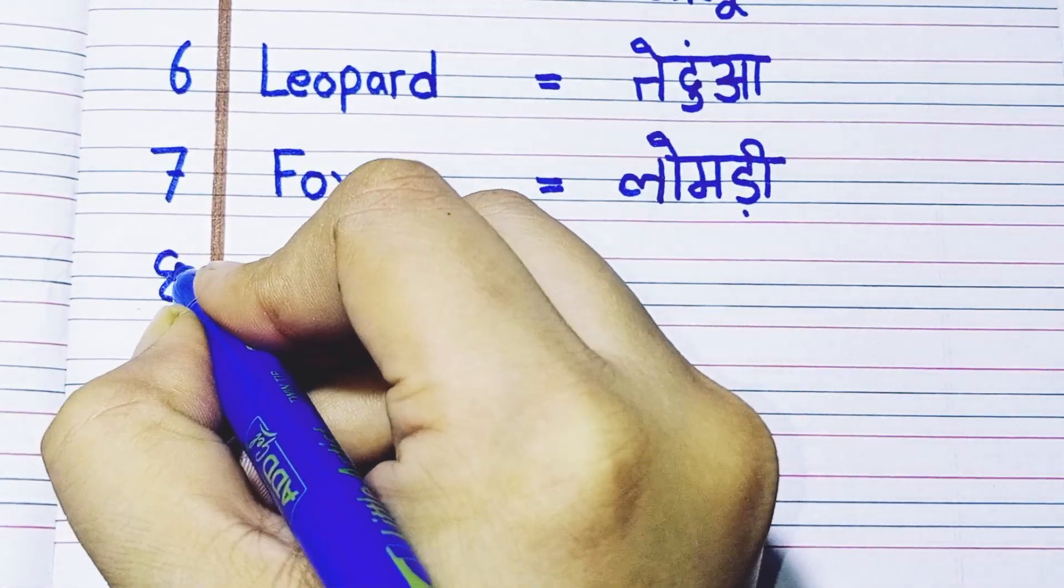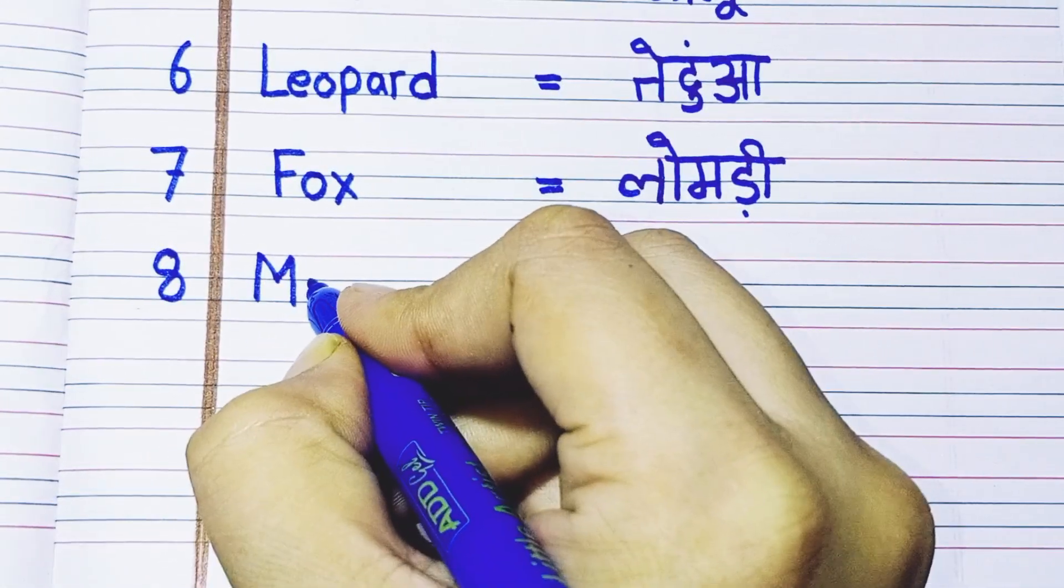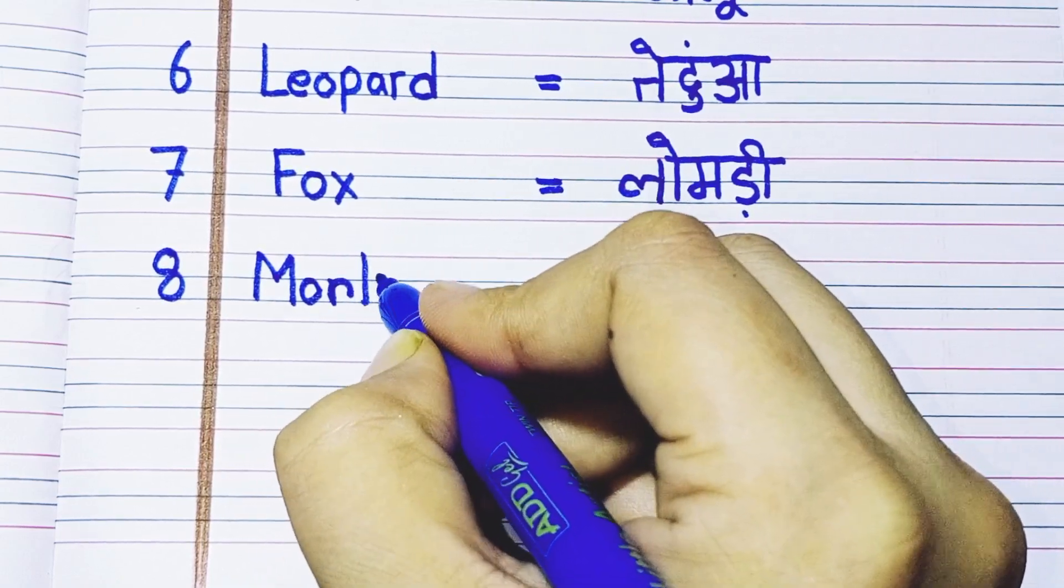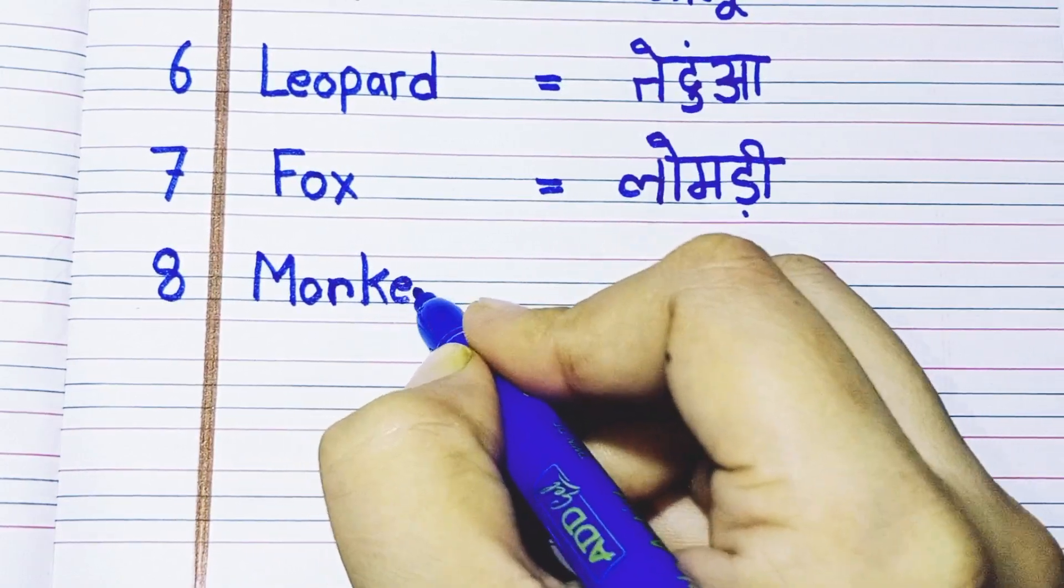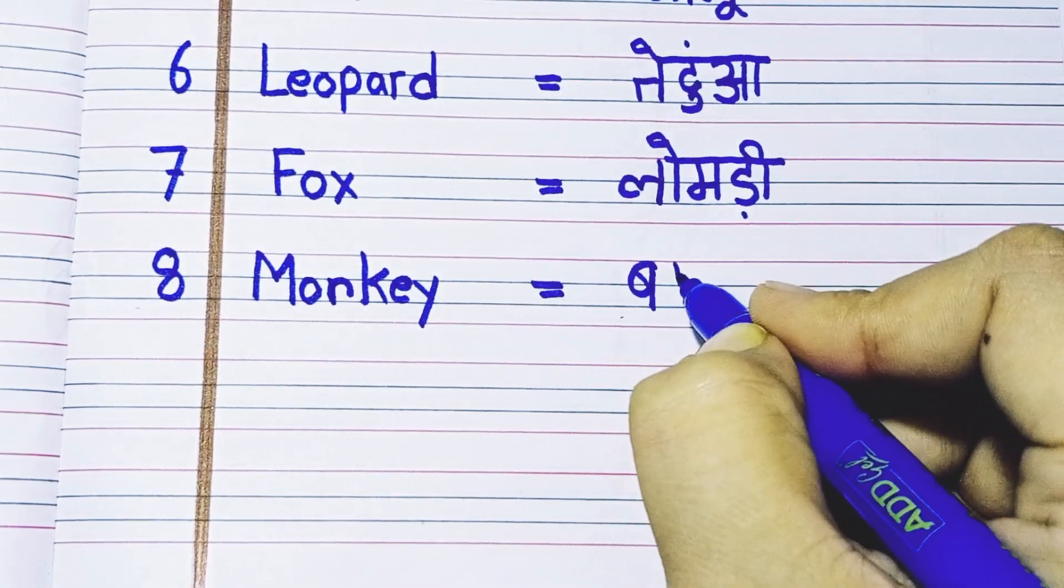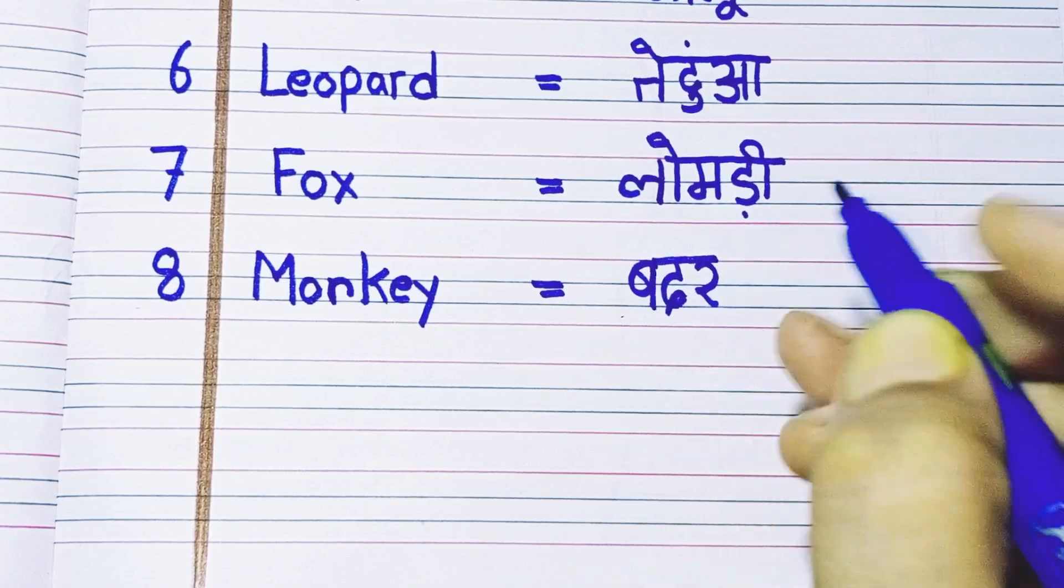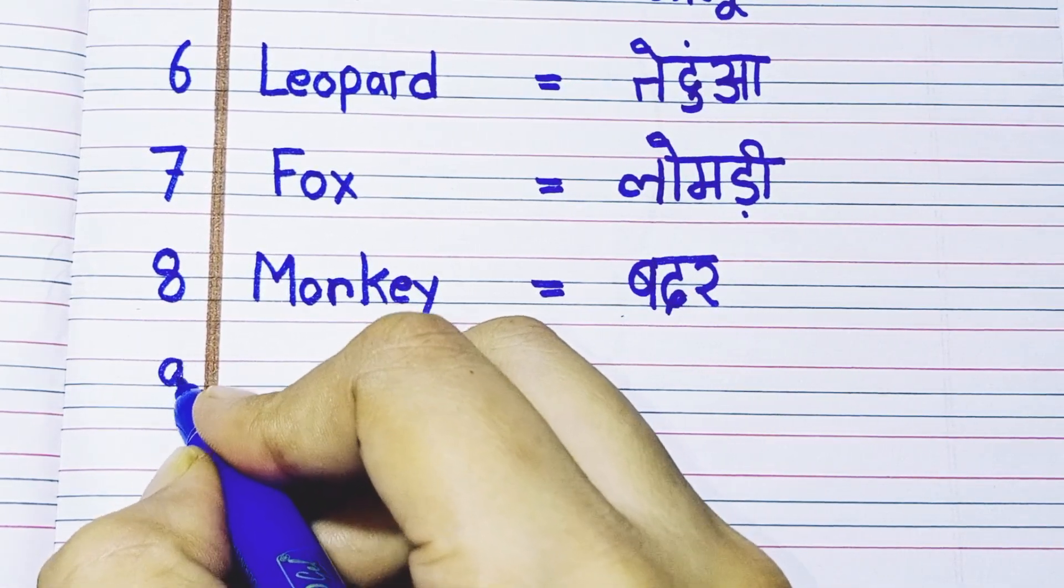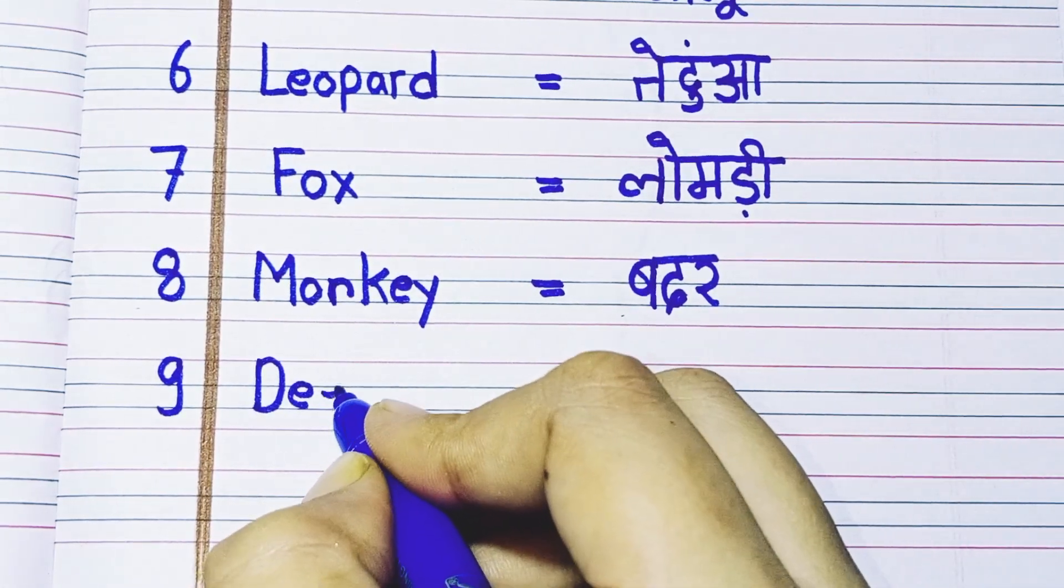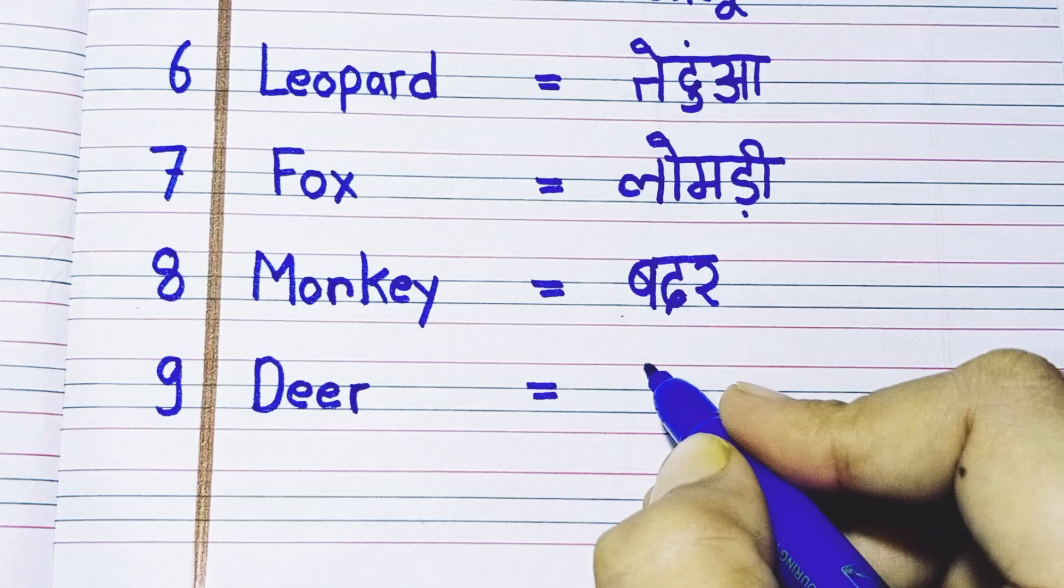Eighth number: M-O-N-K-E-Y, monkey. Monkey means bandar. Ninth number: D-E-E-R, deer. Deer means hiran.